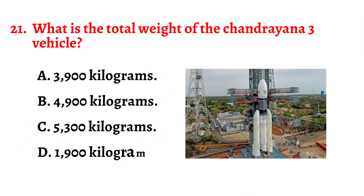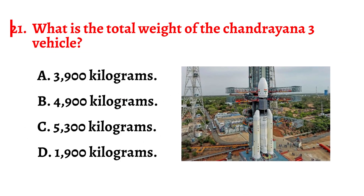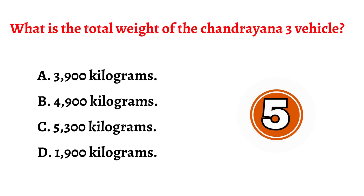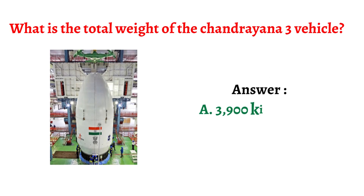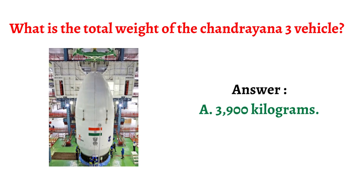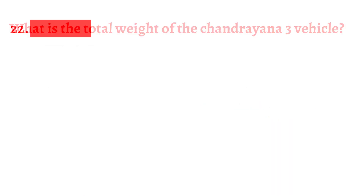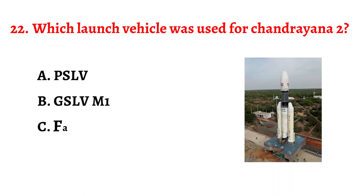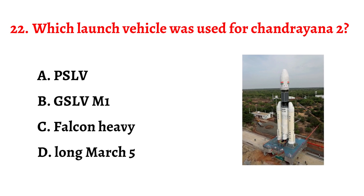Question number twenty-one: What is the total weight of the Chandrayaan 3 vehicle? The correct answer is option A: 3,900 kilograms.